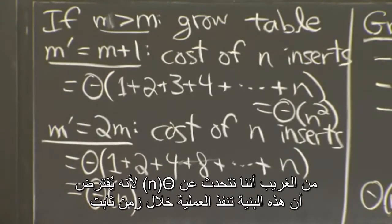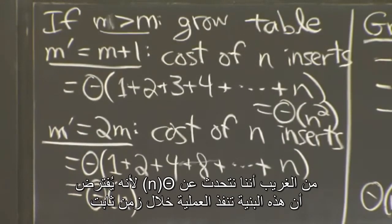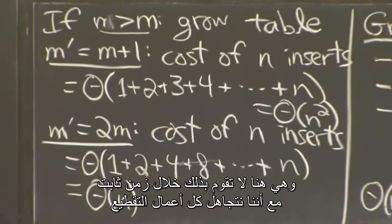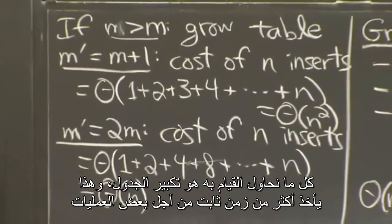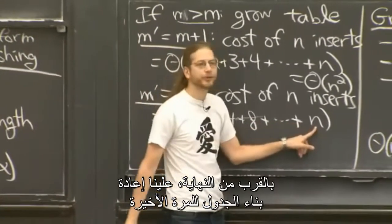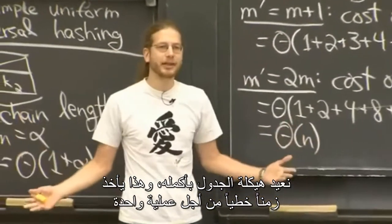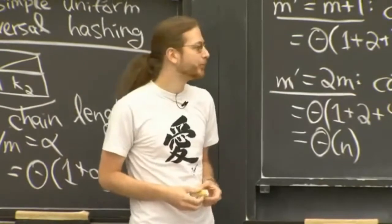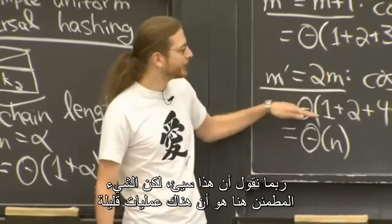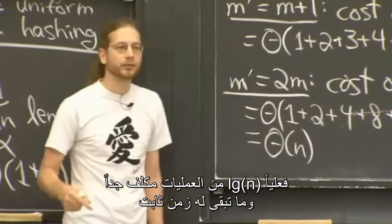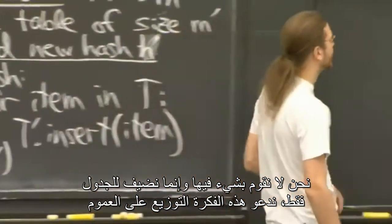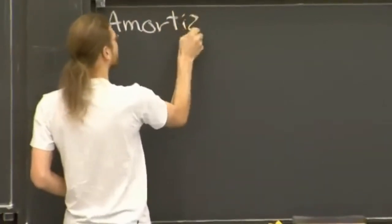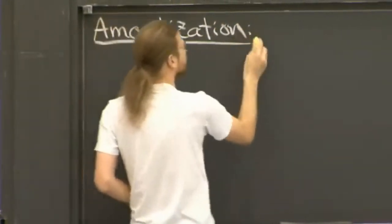Now it's a little strange to say theta n for a data structure supposed to be constant time per operation. This data structure is not constant time per operation — near the end, when you rebuild the last time, you're restructuring the entire table, which takes linear time for one operation. But the comforting thing is there are only log n operations that are really expensive. The rest are all constant time — you just add into the table. This idea is called amortization.